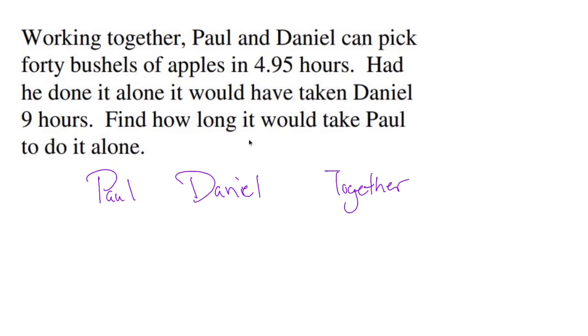Let's do Daniel first. Daniel is 9 hours, so we're gonna do 1 over 9 for Daniel. Paul we don't know, so we'll put 1 over x for Paul.